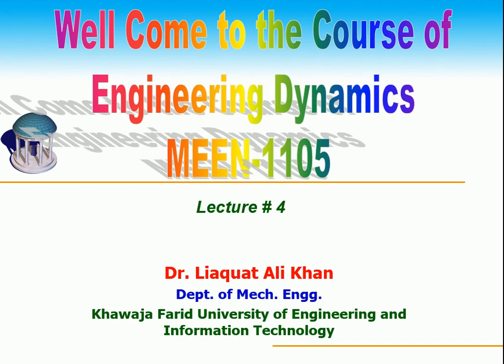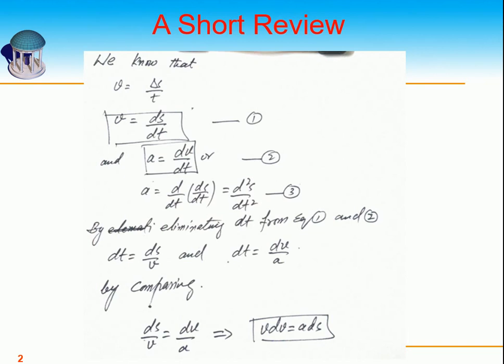For Section A students, they are at almost the same point in the curriculum. We also started Chapter 2 regarding the basic kinematics equations. You know that speed is the rate of change of distance, while velocity is the rate of change of displacement. So V = ΔS/T, or V = dS/dT — this is equation number one.